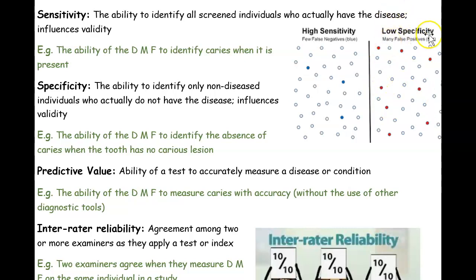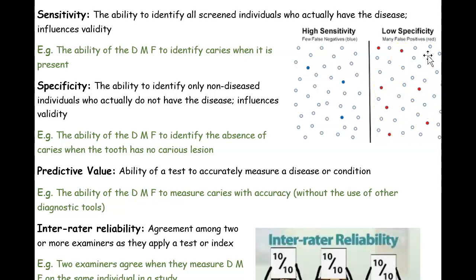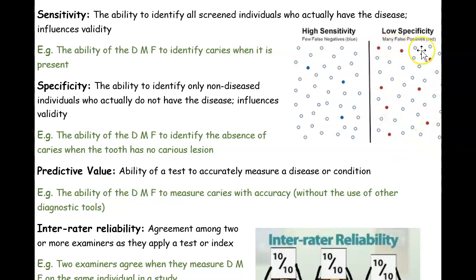Specificity relates to false positives — where I've made more mistakes. Specificity is the ability to identify only non-disease individuals who actually do not have the disease. For example, I identified people as having cavities when they actually don't. When I used my DMFT index, I made the mistake of saying they have caries when they don't.